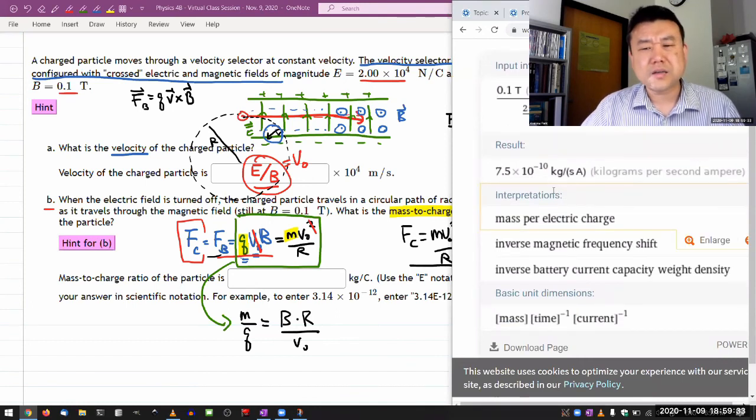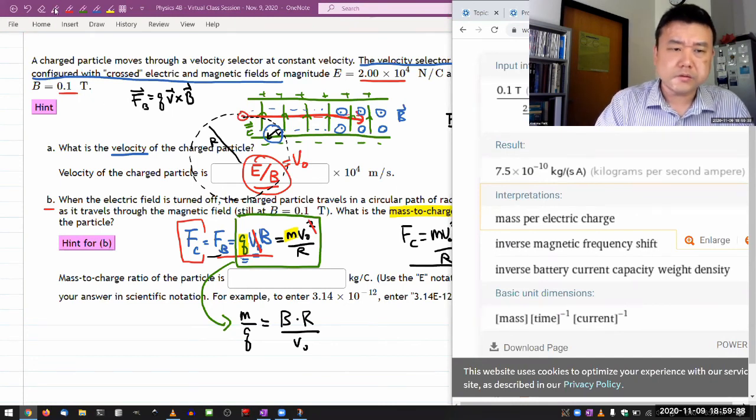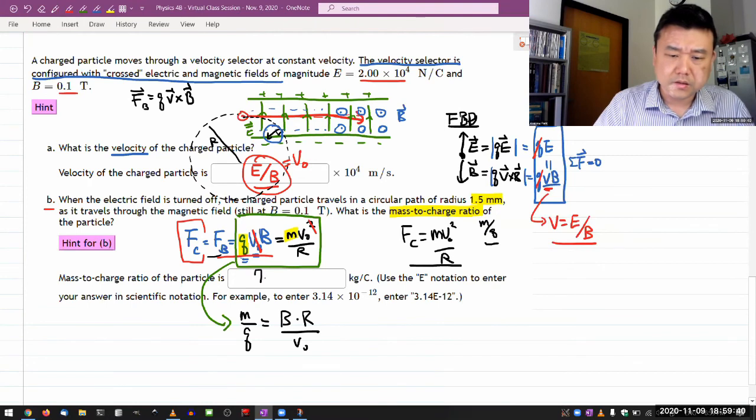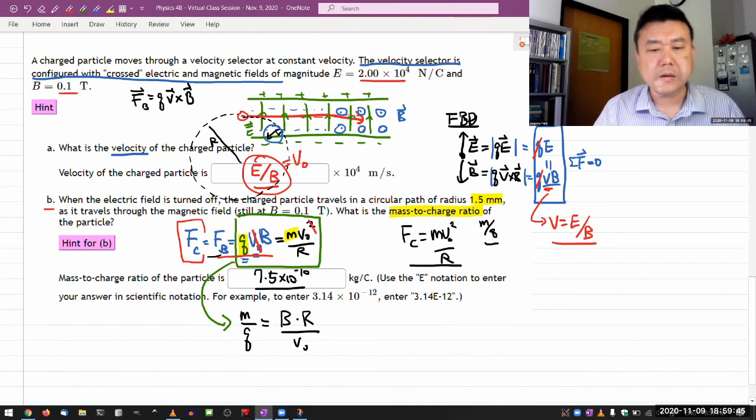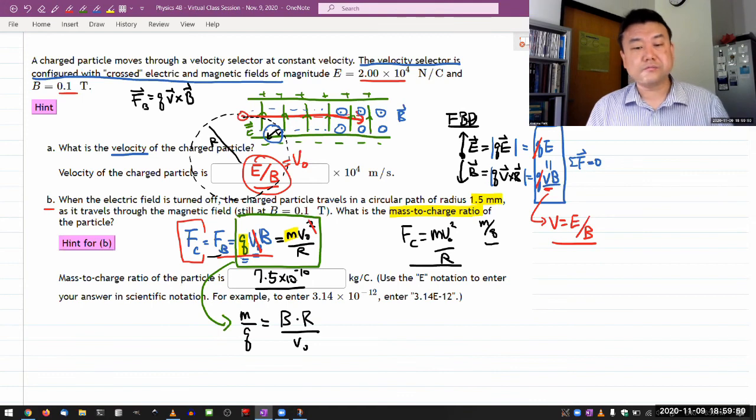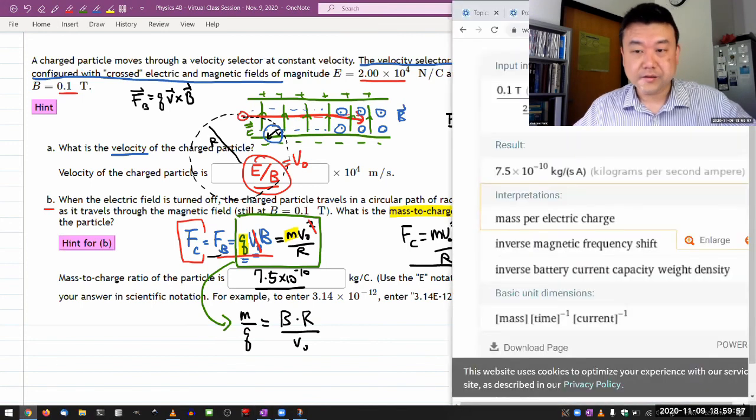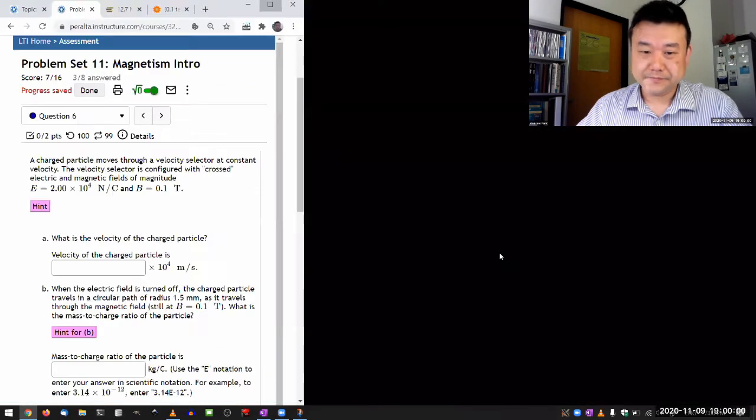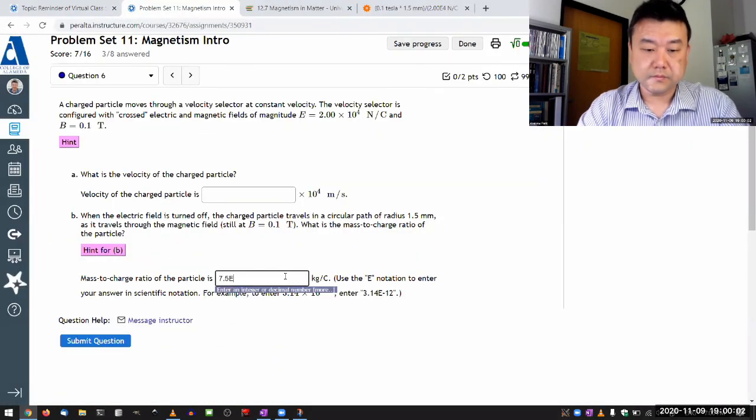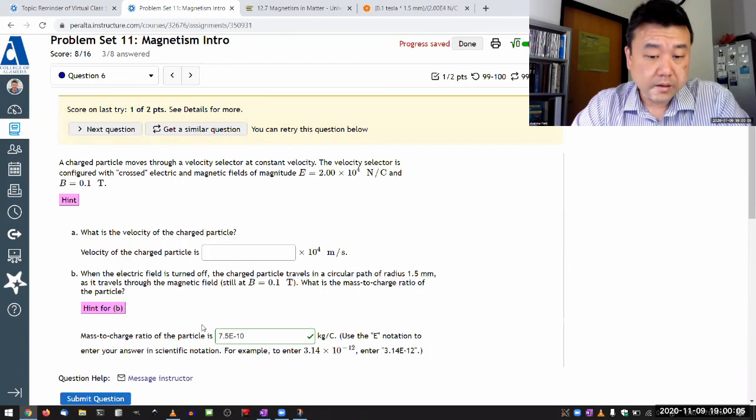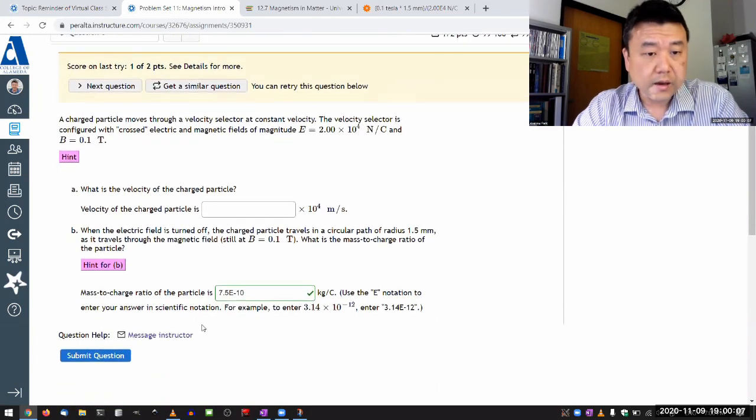So 7.5 times 10 to the minus 10. Yeah, I guess that makes sense for most particles. 7.5 times 10 to the minus 10. I'm trying to remember how that matches up with the electron mass to charge ratio. But anyways, that's the answer. I guess I could plug it in to double check. So I think that's everything we have time for.